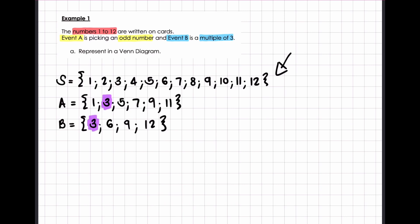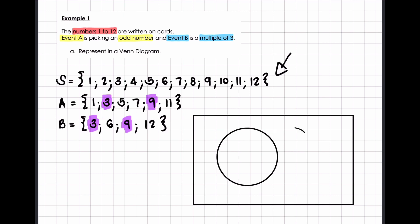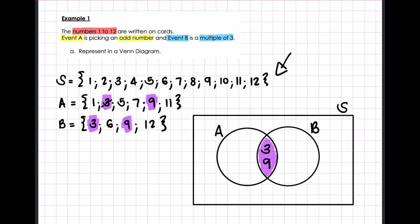We can see very clearly that there's a 3 in both event A and event B, and there's also a 9 in event A and in event B. So these circles are definitely going to overlap. We start by drawing our rectangle, then our circles. Our circles are going to overlap and intersect. We label one circle event A and the other circle event B. Whenever we have an intersection, we start in the intersection, placing the values 3 and 9 in our Venn diagram. Once placed, I cross them out of my events and out of my sample space.